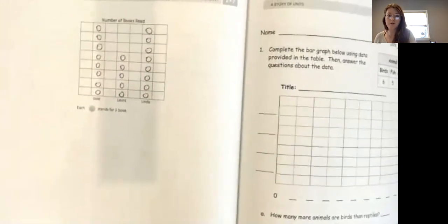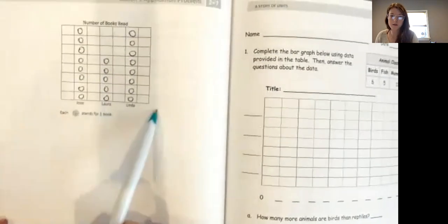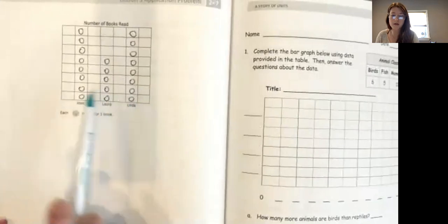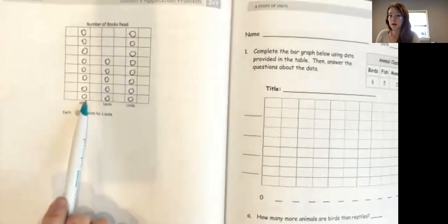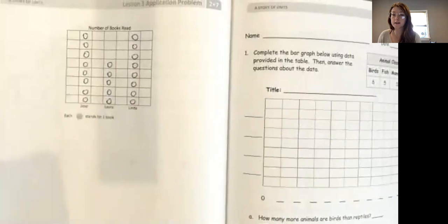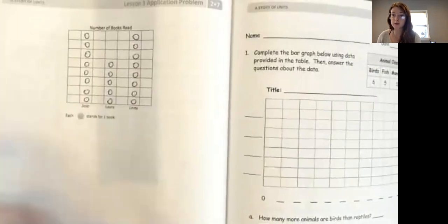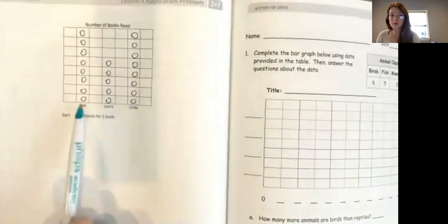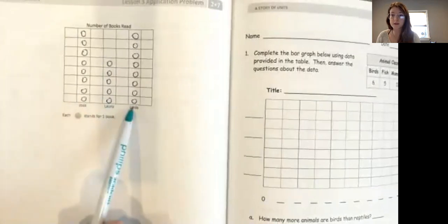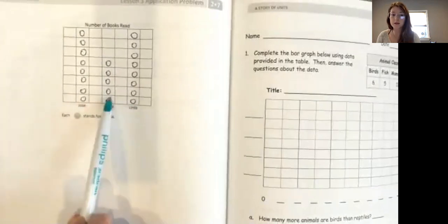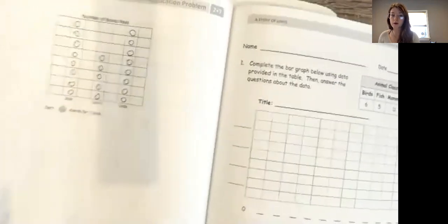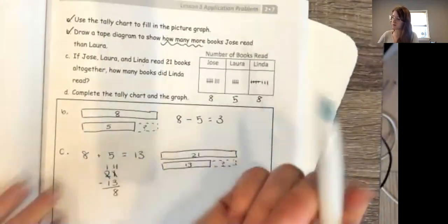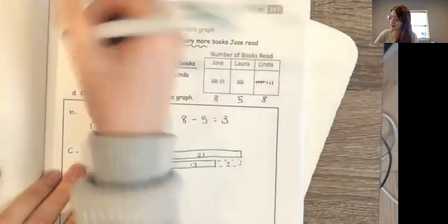So if I look at my graph I can see that Linda and Jose read the same amount of books. They both read eight. So if I want to figure out how many they had all together, I can double check my work. We know they read 21, but I can check my work by saying 8 and 8, Jose and Linda's together gives me 16 because 8 and 8 gives me 16 plus 5 more gives me 21. Does that match what I know that they read 21 books? Yes it does. Awesome.